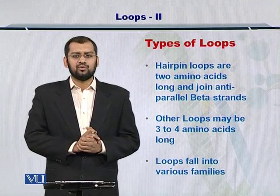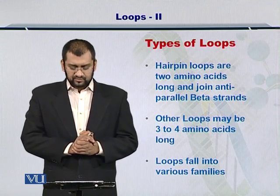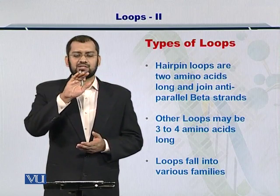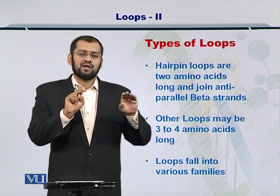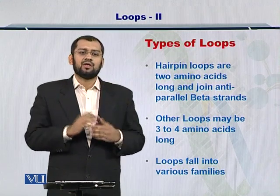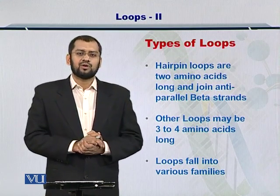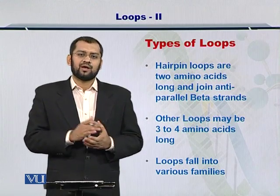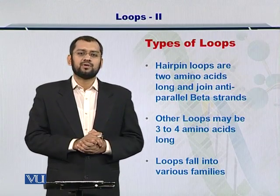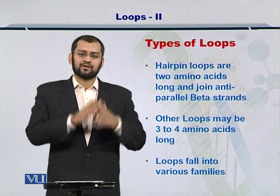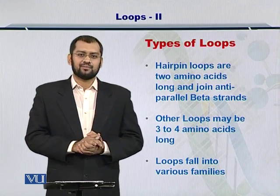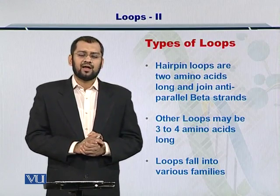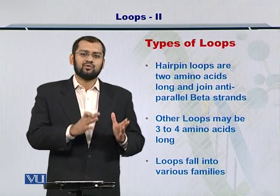There are various types of loops. For instance, the hairpin loop typically joins two anti-parallel beta sheets. If a beta sheet is going in one direction, a hairpin loop will join it with a different beta sheet in order for the beta sheet to take a turn. In other words, such loops are also called turn loops. Turn loops may have just two amino acids, but there are other loops which may have three, four, or even five amino acids, making them bigger and therefore more flexible. Also, these loops can be classified into families, and one can study them in detail by looking at which family a loop belongs to.